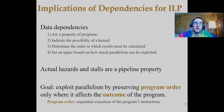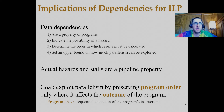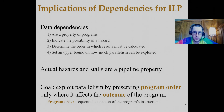Data dependencies limit how much parallelism can be exploited. They fundamentally limit how much you can parallelize a program because they impose constraints on how much you can overlap and reorder the execution of instructions. The goal of instruction-level parallelism is to increase parallelism while preserving program order where it affects the outcome. Program order is the notion of sequential execution of the program's instructions, as well as preserving branch behavior.